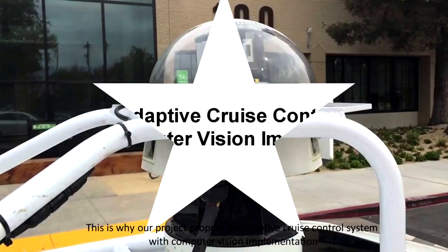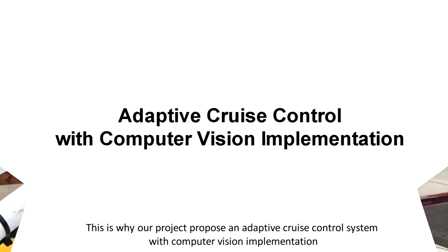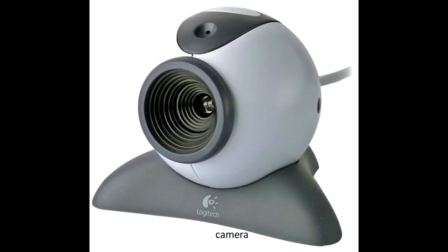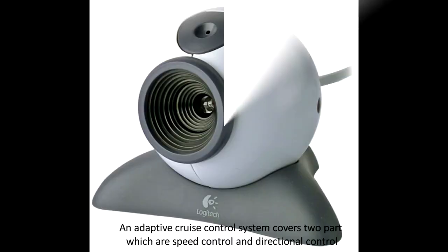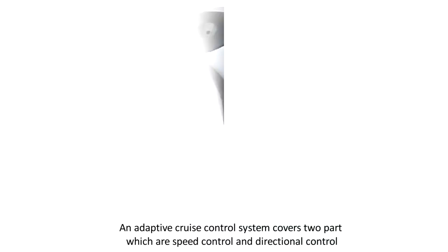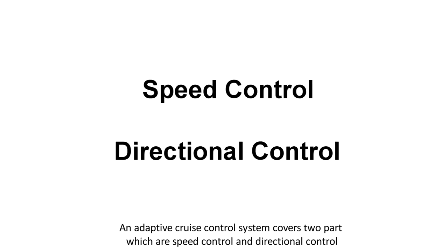This is why our project proposes an adaptive cruise control system with computer vision implementation, which uses the cheapest and most commonly available sensor: the camera. An adaptive cruise control system covers two parts, which are speed control and directional control.